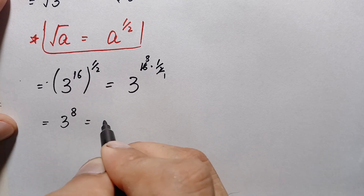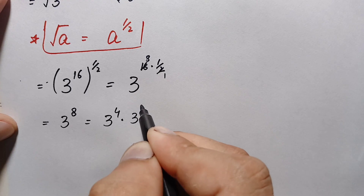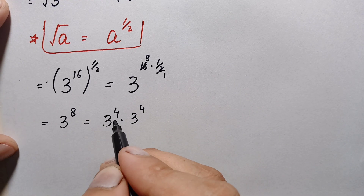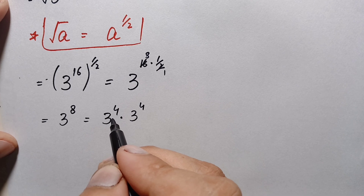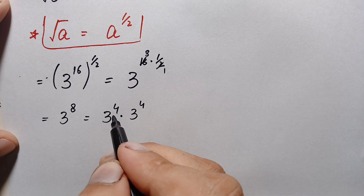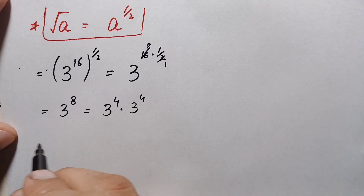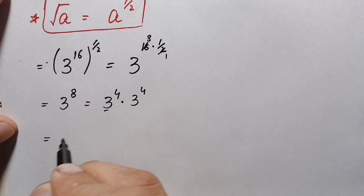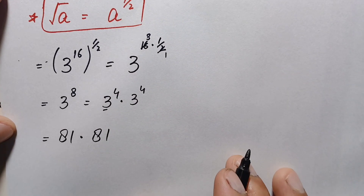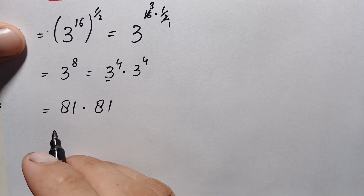Now we write 3 raised to power 8 as 3 raised to power 4 times 3 raised to power 4, which combines to give 3 raised to power 8. The value of 3 raised to power 4 is found by multiplying 3 four times: 3 times 3 is 9, 9 times 3 is 27, and 27 times 3 is 81. So this becomes 81 times 81.